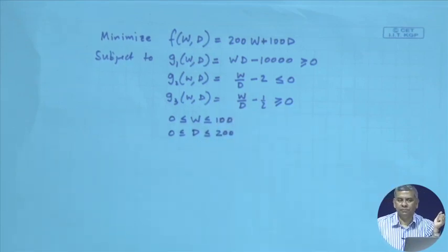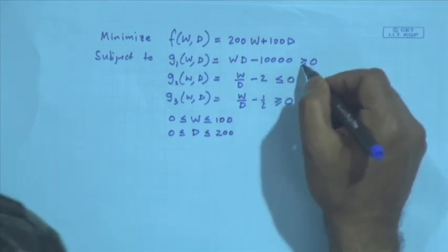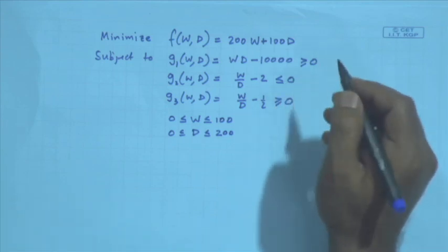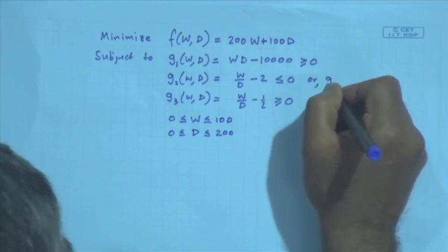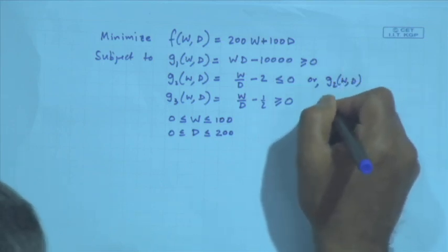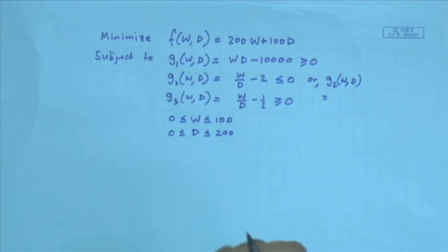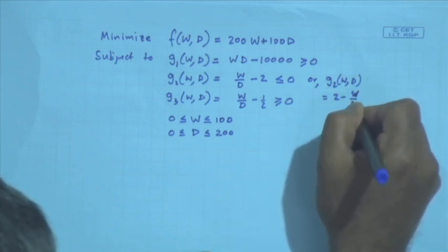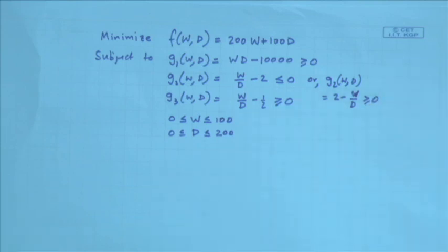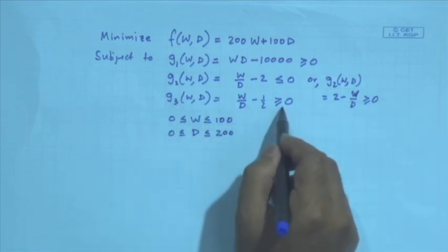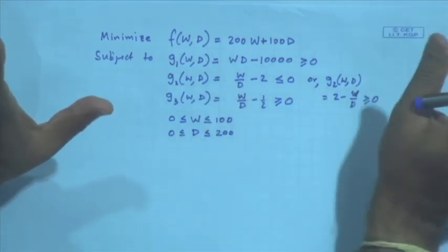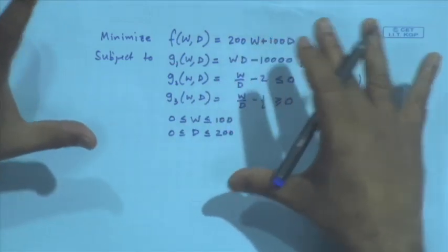And g₃: W/D − 1/2 ≥ 0. Variable bounds: 0 ≤ W ≤ 100 and 0 ≤ D ≤ 200. Notice we are deviating from nonlinear programming convention — the sign has to be greater than or equal to — so I rewrite g₂ as 2 − W/D ≥ 0. So g₂ is 2 − W/D and g₃ is already in greater-than-or-equal-to form, and g₁ is also already in that form.